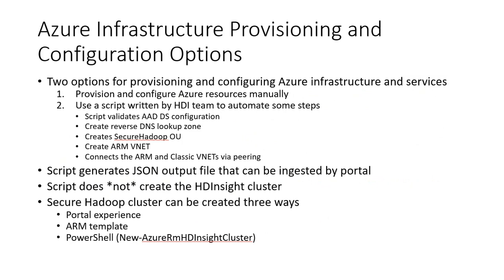Moving on to Azure infrastructure provisioning and configuration options. We have two options: provision and configure Azure resources manually, or use a script written by the HDI team to automate some of the steps. The script is available to validate the AAD DS configuration — it will validate the reverse lookup for DNS, create the secure Hadoop organization unit, and then create the ARM vNet and connect the ARM and classic vNet via peering. The script generates a JSON output file that can be ingested by the portal or via AZ as well.